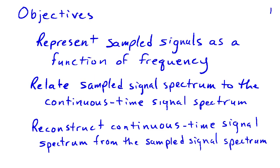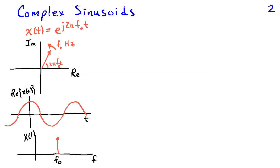In this video, we're going to look at the spectrum of discrete time, or sampled signals. Our objective is to use the spectrum as a tool to represent sampled signals as a function of frequency. We will relate the sampled signal spectrum to a continuous time signal spectrum and also use the sampled signal spectrum to reconstruct a continuous time signal spectrum. We're going to begin by looking at complex sinusoids.